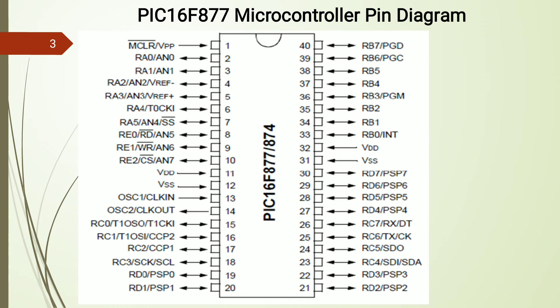The additional pin functions for Port C include CCP1/CCP2, synchronous clock, and TX/RX related to RC6 and RC7. For Port D, the additional function is PSP — Parallel Slave Port — starting from RD0 as PSP0 up to RD7 as PSP7, providing an 8-bit parallel port assigned to Port D.